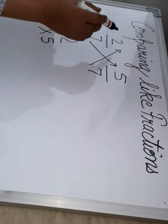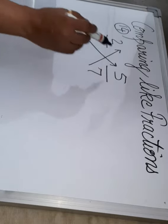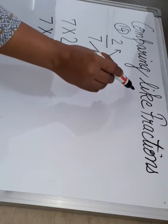Just write here 7 multiplied by 2, how much? 14. And 7 multiplied by 5 equals 35.